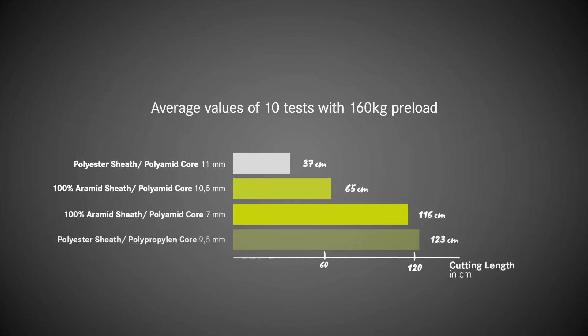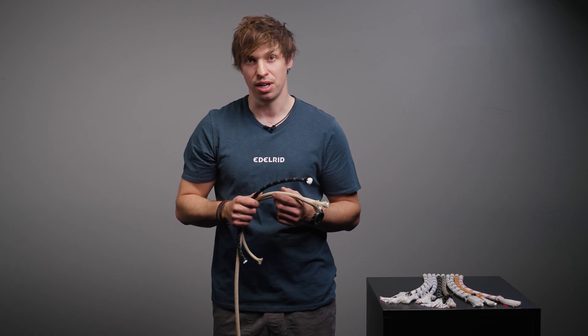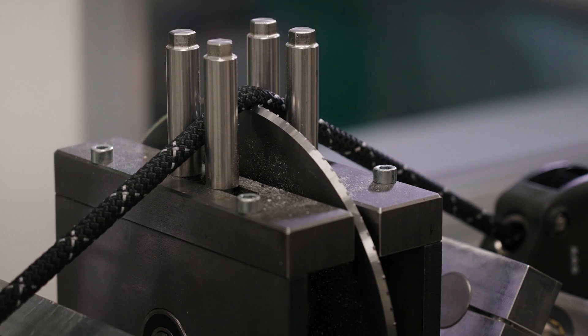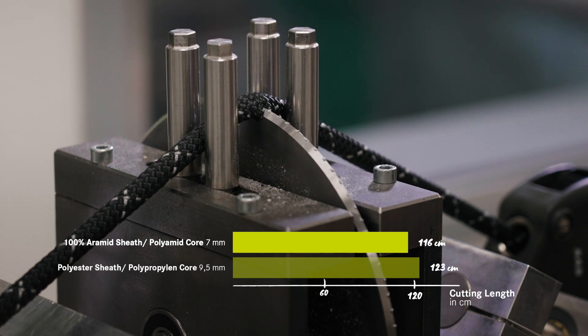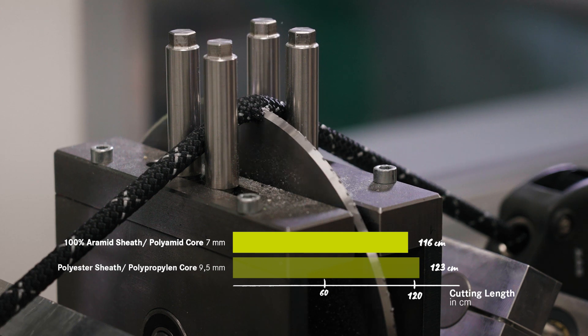The 10.5mm static rope with a 100% aramid sheath is clearly better than the best rope from our earlier tests at 160kg. But interestingly, the 7mm accessory cord — which is 3.5mm thinner than the static ropes — is even better than the 10.5mm static rope. This shows that aramid could be a positive influence on the cut value, but the construction and all the parameters within it are what really counts. To underline this further, the polypropylene and polyester rope — with no aramid whatsoever — has an even higher cut value than the 7mm accessory cord with a 100% aramid sheath.